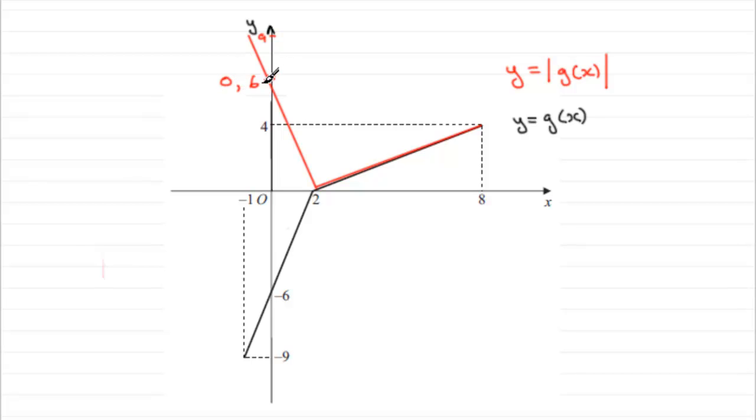We could even write (0,6) there if you like, in coordinates, and we could change that one to (2,0) as well. But there you go, that's what it should look like.